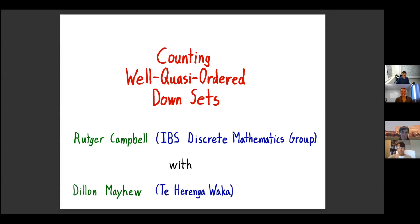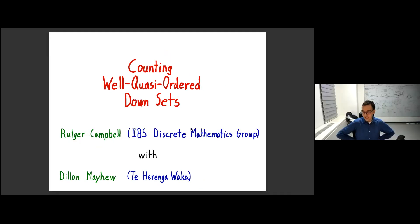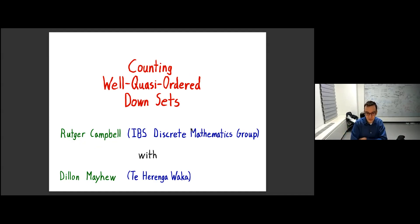Thanks for coming everyone. Today we have Rutger Campbell, who's at the IBS in the discrete math group, and he's going to be talking about counting well-quasi-ordered downsets. This actually comes from a problem Dylan asked last year from last year's open problem session, so this is sort of the perfect time to take this up. This is all joint work with Dylan.